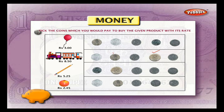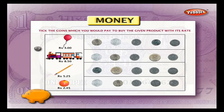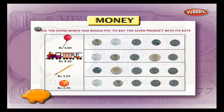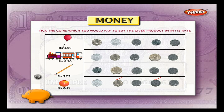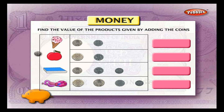The cost of a pencil is 5 rupees 25 paisa; for this we should use a 5 rupee coin and a 25 paisa coin. The cost of a pomegranate is 2 rupees 45 paisa; for this we should use a 2 rupee coin, a 25 paisa coin and a 20 paisa coin.